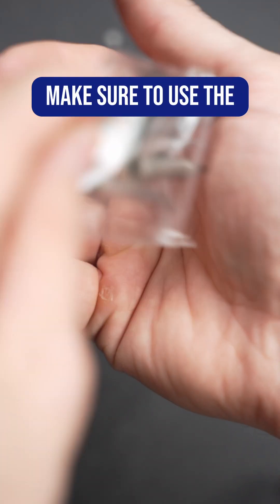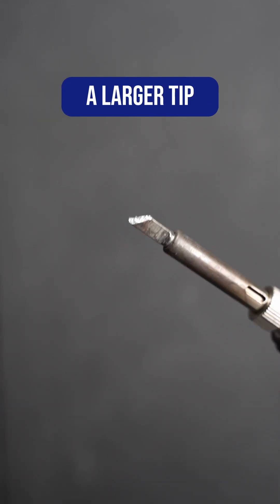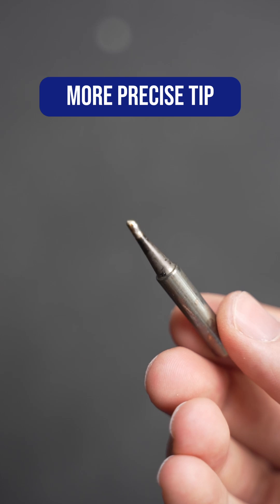When soldering, make sure to use the right iron tip for the job. When working with large solder pads and wires, make sure to use a larger tip. For smaller wires, use a more precise tip.